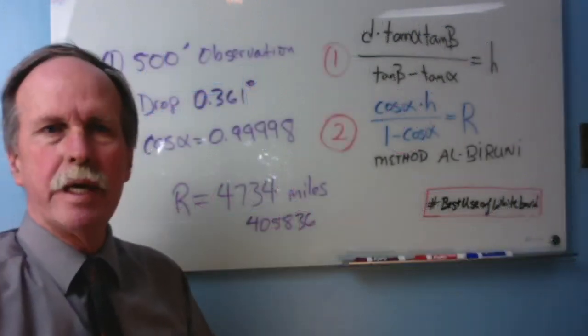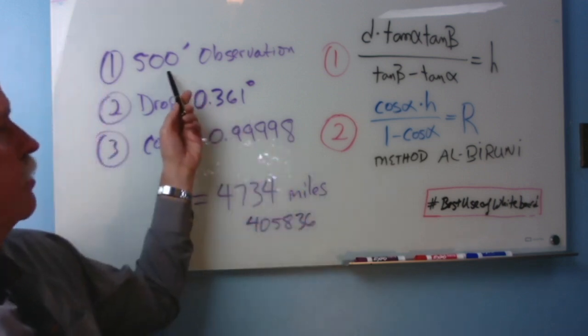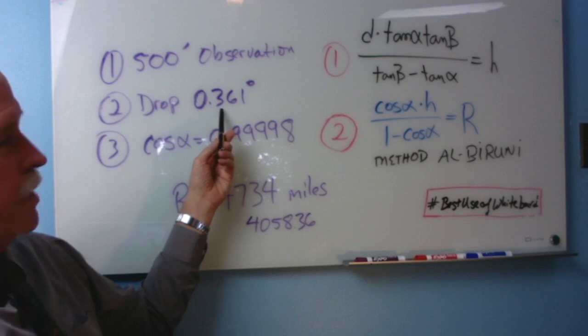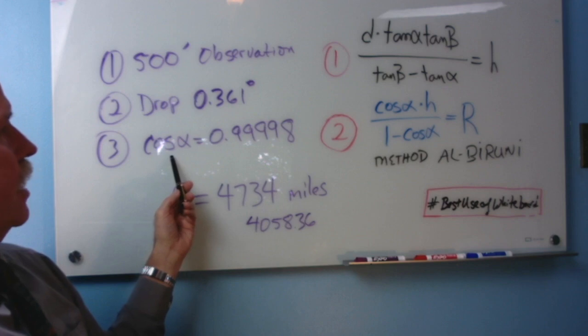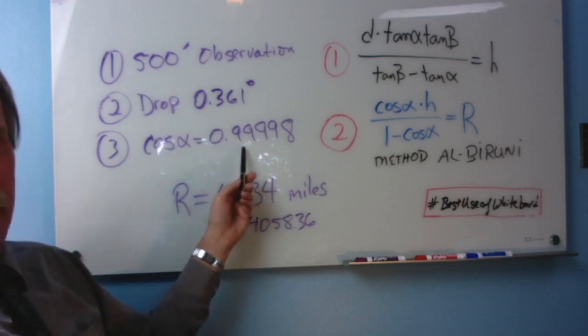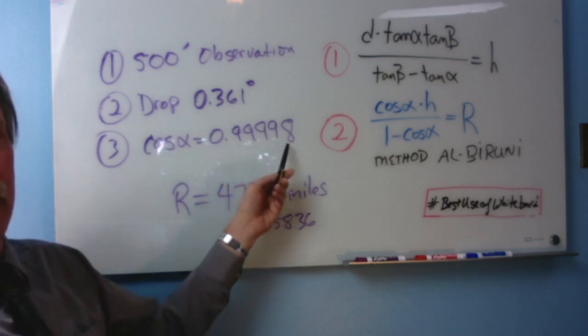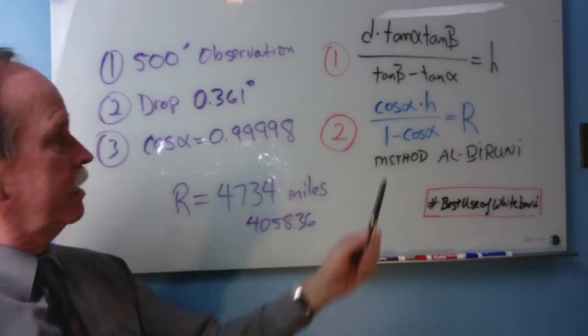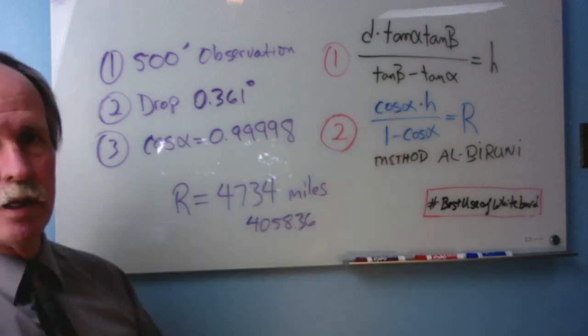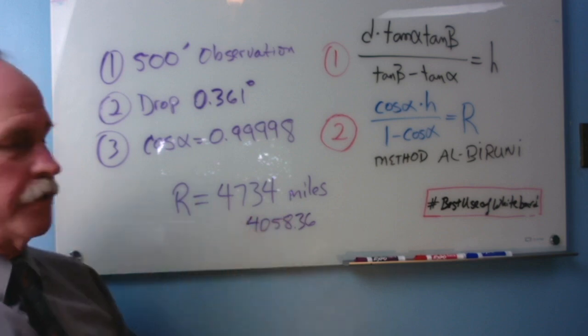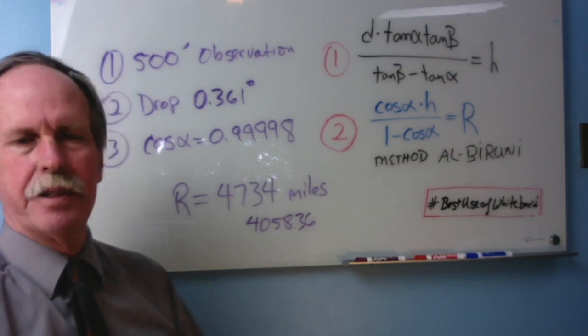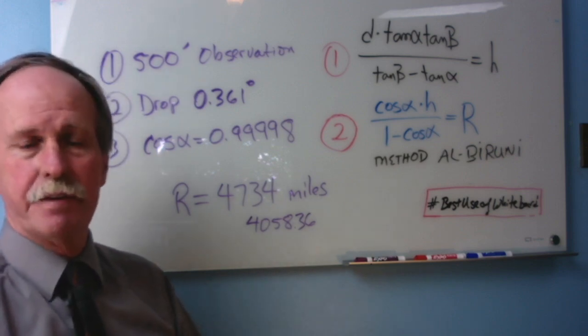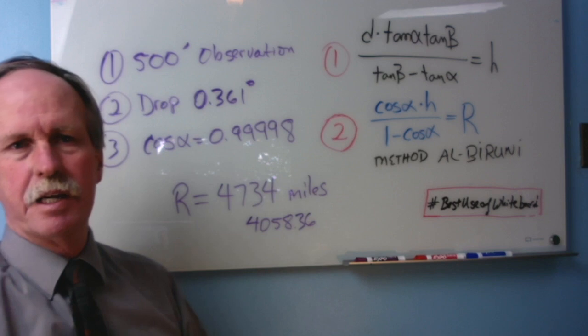Let's go ahead and put some real numbers in with this. If we have an observer height of 500 feet, the drop to the horizon will be 0.361 degrees. The cosine of that angle is 0.99998. If we plug that into our formula here, we come up with a radius of the Earth of 4734 miles. Why is it higher than the actual radius of 3959 miles? Well, that's because of refraction.